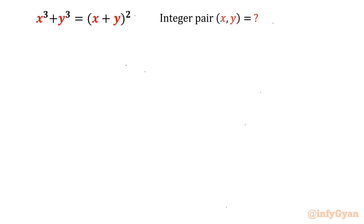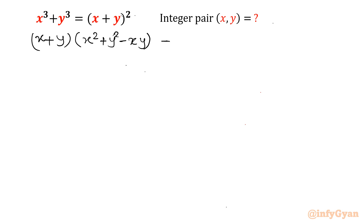What is a³ plus b³? That value will be (a plus b)(a² plus b² minus ab). And let us take x plus y towards the left, equal to 0. So this is a³ plus b³ equals (a plus b)(a² plus b² minus ab).